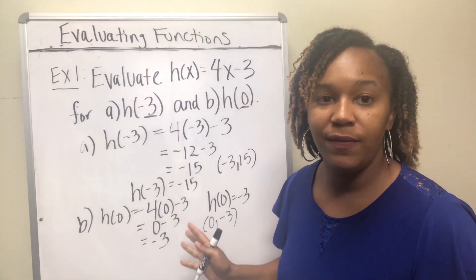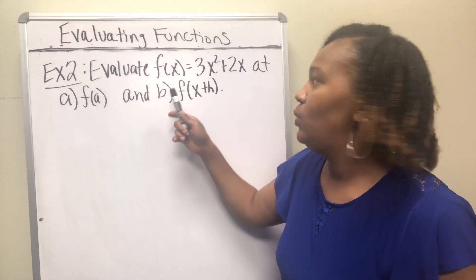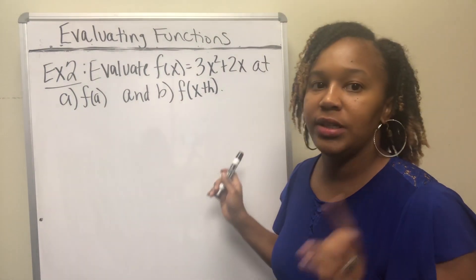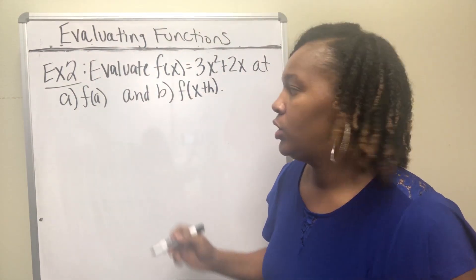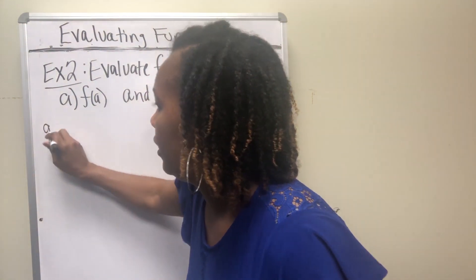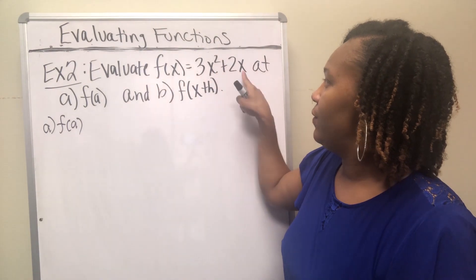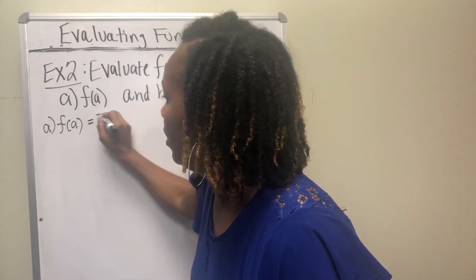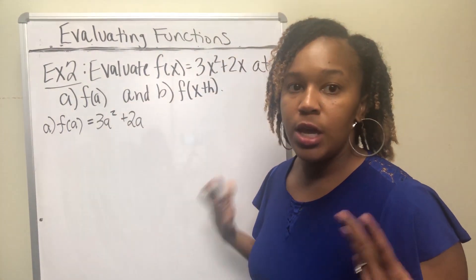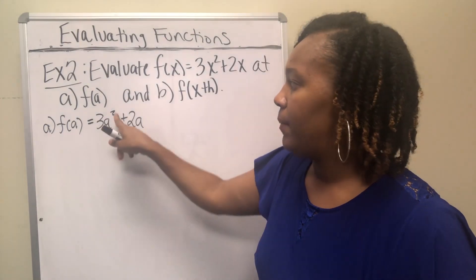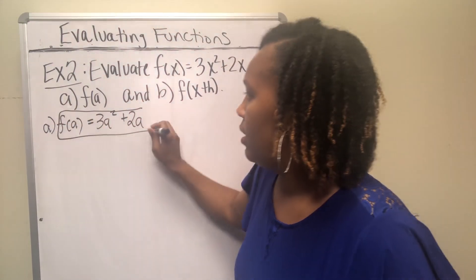That's how you evaluate functions with numbers. For example 2, evaluate f of x equals 3x squared plus 2x, first at f of a, then at f of x plus h. For part A, pretty simple — wherever there was an x, replace every x with a. That gives 3a squared plus 2a. You can't combine those terms since one has a square and one doesn't, so the answer is f of a equals 3a squared plus 2a.